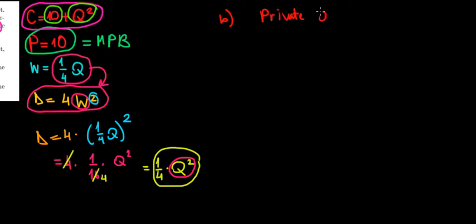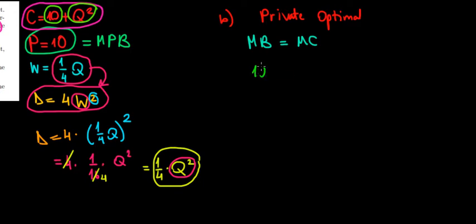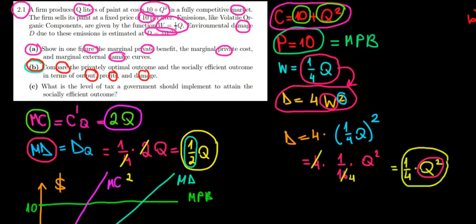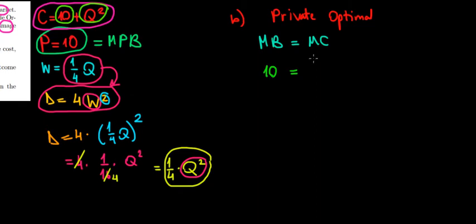For the private optimal solution, we know that under the private optimal we set the marginal private benefit equal to the marginal cost of production — the most basic rule. The marginal benefit is $10, and the marginal cost we calculated in the previous video is 2Q. So 10 = 2Q, meaning the optimal quantity under private production is equal to 5 units.